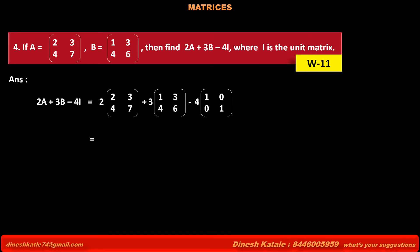This is equal to the first term having matrix: 2 times 2 is 4, 2 times 3 is 6, 2 times 4 is 8, 2 times 7 is 14.